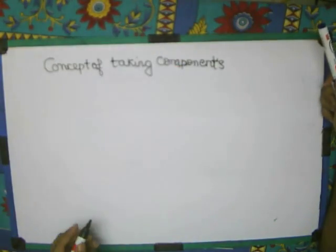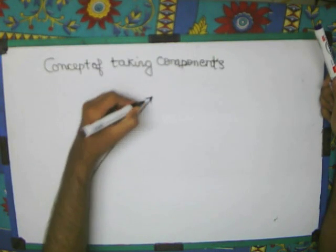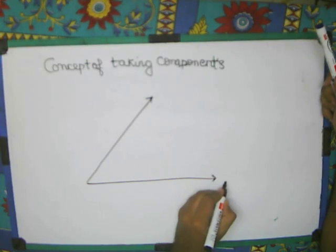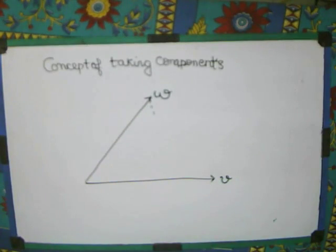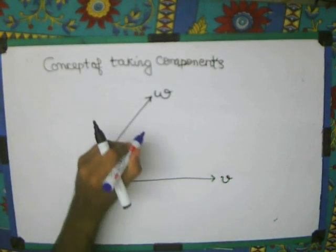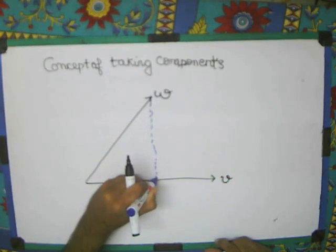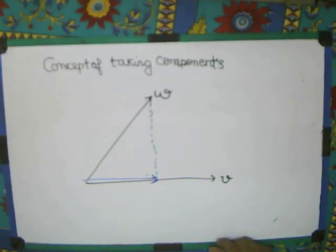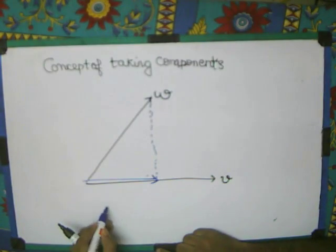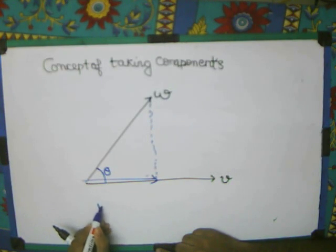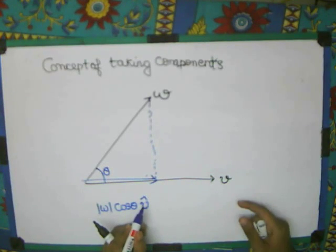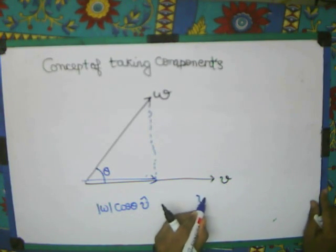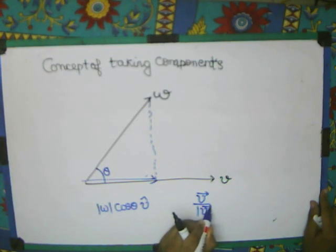Now, what is this concept of taking components? For example, I have two vectors. This is V, this is W. Now, if I have to take the projection of, or the component, the component of W, which is X, in the direction of V, then this is what I will get. So how will I get it? It will be nothing but mod W cos theta and V cap. V cap means V vector divided by absolute value of V. This is what will be? This is something which is equal to V cap.